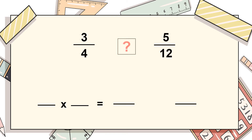Now what if the denominators are not the same? Then we must find a common factor that can multiply the denominator of one side to be equivalent to the other. In this scenario, 4 is a factor of 12. Using factor 3, we can equalize the denominators. We multiply both numerator and denominator of 3/4 by 3: 3 × 3 = 9 and 4 × 3 = 12, giving us the new fraction 9/12.